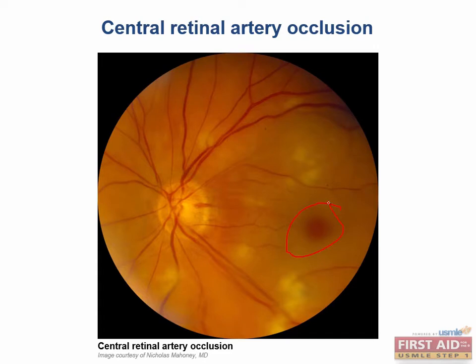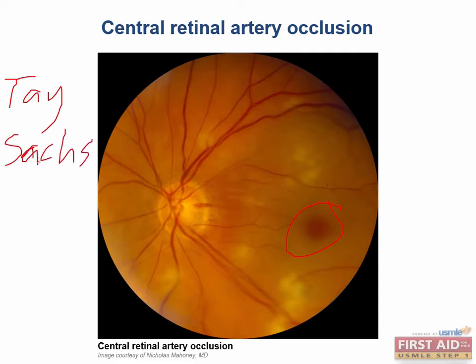In what other disease would you see a cherry red spot? This disease is caused by hexosaminidase A deficiency. The answer is Tay-Sachs disease, and a cherry red spot is one of the most common clues that you will get for this disease.